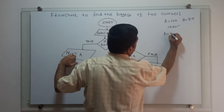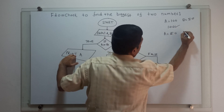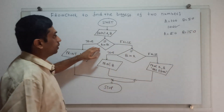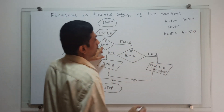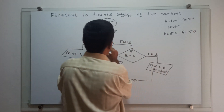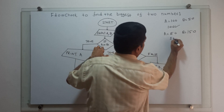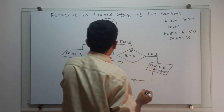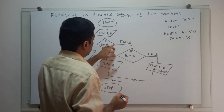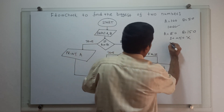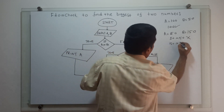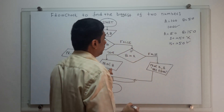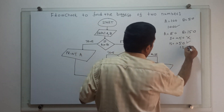Now I am giving another example where A is 50, B is 150. It will check 50 greater than 150 — A greater than B — which is false. Then we come to the next condition, B greater than A: 150 greater than 50 is true, so it will print B — it will print 150.